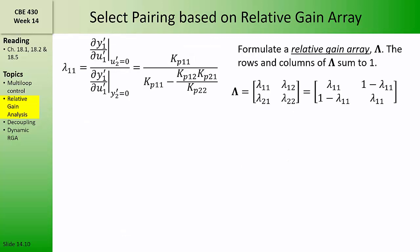Now we can compute the relative gain lambda11. It's the open loop gain, kp11, divided by the closed loop gain. Once we've computed lambda11, we can construct what's called the relative gain array, capital lambda, which organizes the lambdas in a matrix. It turns out that in the relative gain array, the sum of each row and each column must be equal to one. So for the two-input, two-output case, we only need to compute one of the relative gains. If we know lambda11, we can easily find lambda12, lambda21, and lambda22 by noting that the sum of each row and each column must be one.